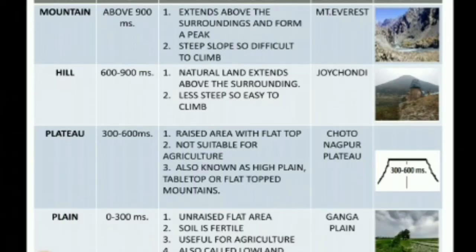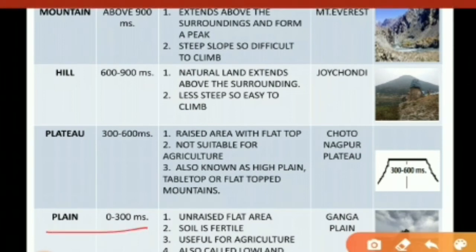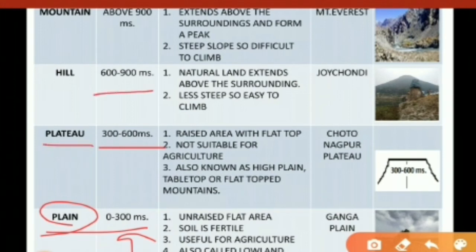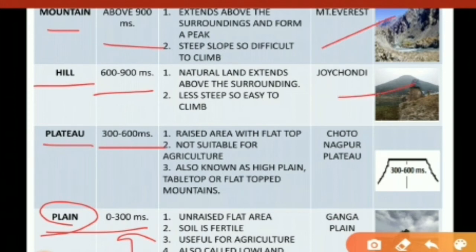On the earth's surface we have different major landforms based on their height and shape. From ground surface up to 300 meters, the land is known as plains. From 300 to 600 meters it is plateau. From 600 to 900 meters it is hill. Above 900 meters the land is specifically known as a mountainous region. Examples include Mount Everest as a mountainous region, Joychundi as a hill, Chhatnakpur as a plateau, and the Ganga as a plain region.